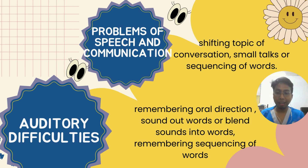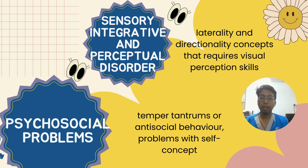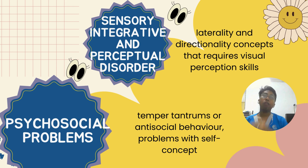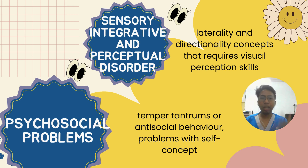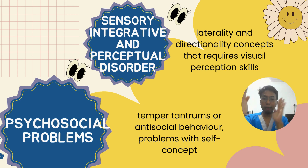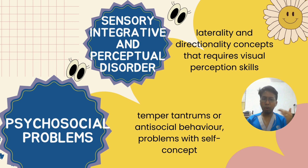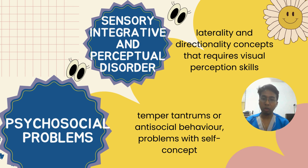Children with auditory difficulties also struggle to process how sounds work — for example, what a chicken or cow sounds like — and they can't sound out or blend sounds into words or remember sequences of words. The seventh type is sensory integrative and perceptual disorder, involving laterality and directionality concepts that require visual perception skills. For example, when solving a nine-piece puzzle, if the image is rotated slightly, they struggle to remember the visual perception, causing frustration.